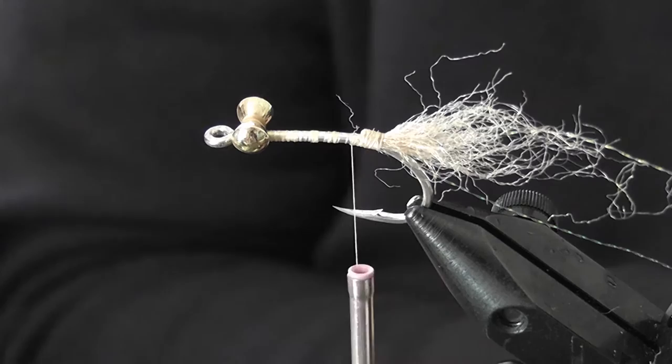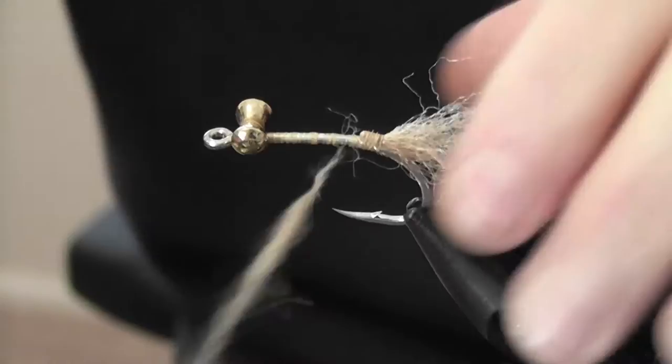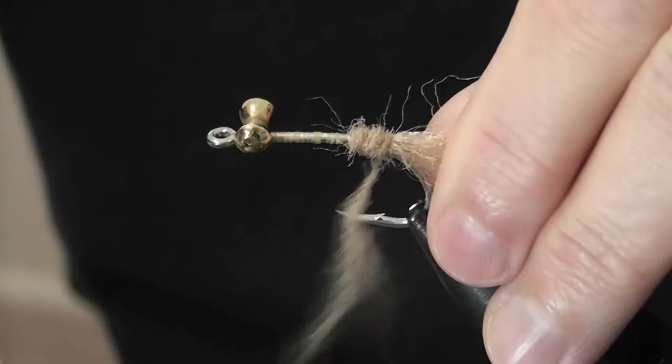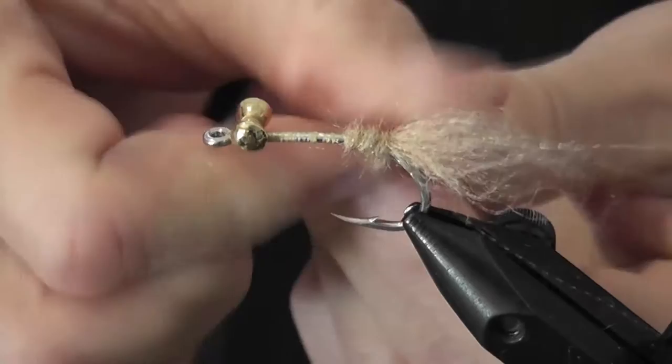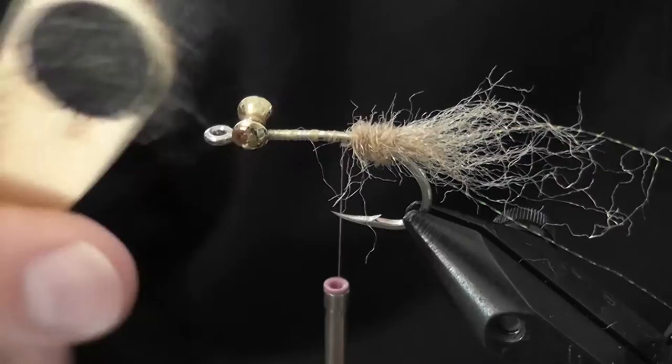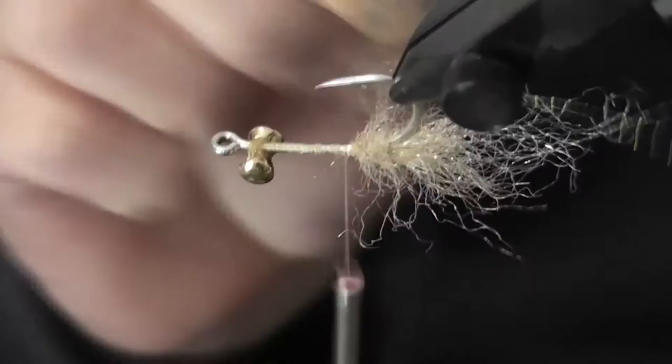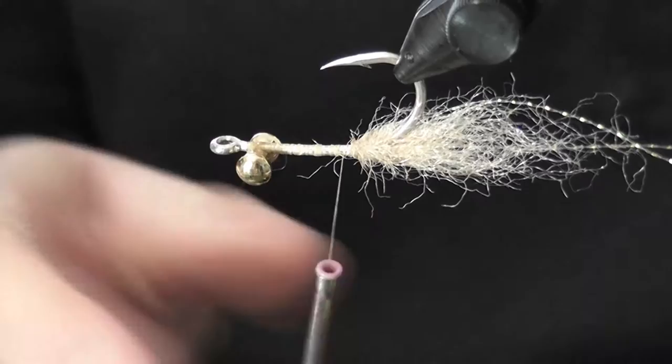The next step is I'm just going to take a little bit more of the dubbing. But this time I'm actually going to dub it onto the thread. Form a little rope like that. And then I'm just going to dub that forward to the mouth parts. And then I get my little dubbing brush. All my dubbing brushes is a piece of velcro on a paddle pop stick. That's all I use for these ones. And just rough it up a little bit like that and then push that forward so you can see it blends into the piece at the front.